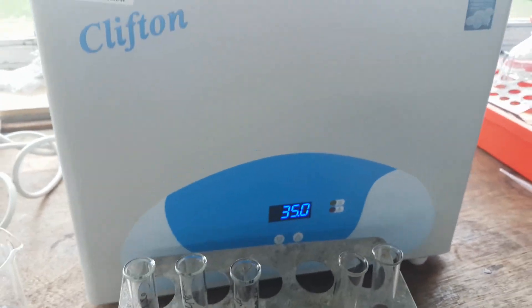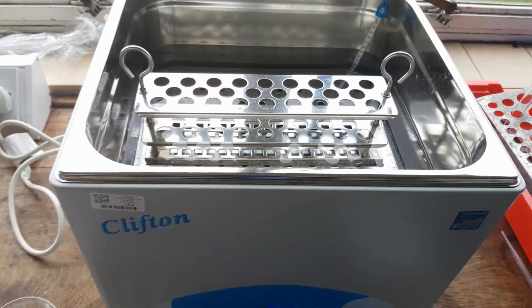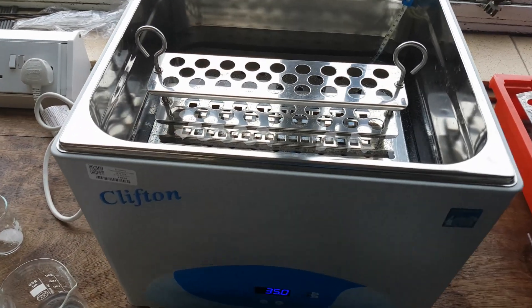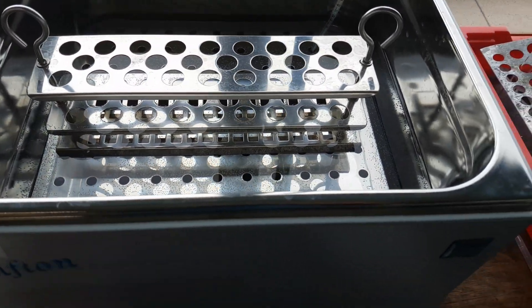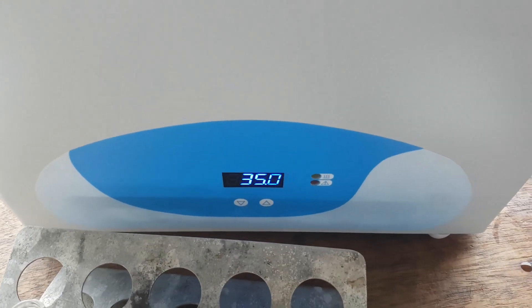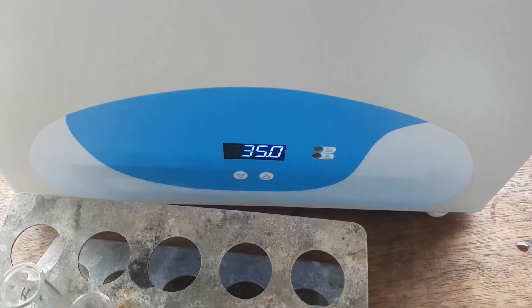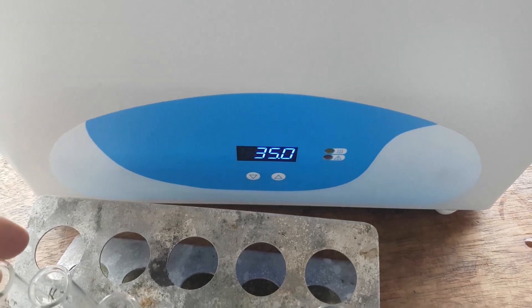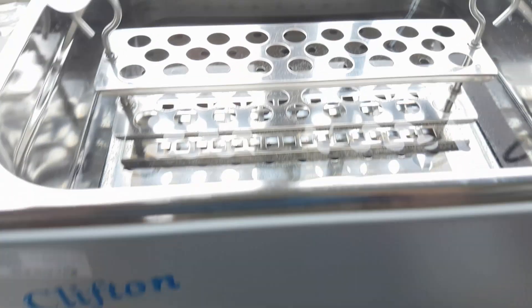And now I'm going to use this bad boy here, which I can't believe I didn't know we had, which is wicked. And what I'm going to do, this is a water bath. This is keeping us at a stable, constant, 35 degrees Celsius, which means we are controlling the temperature as well. So this is another control variable. We are keeping it the same.